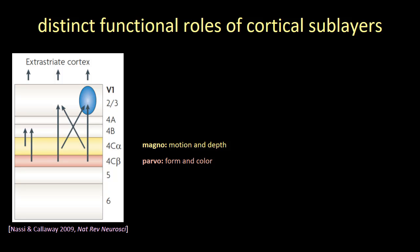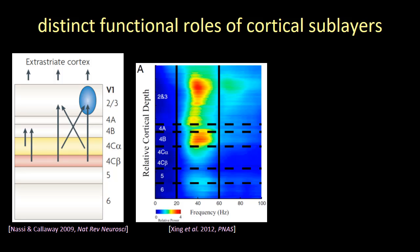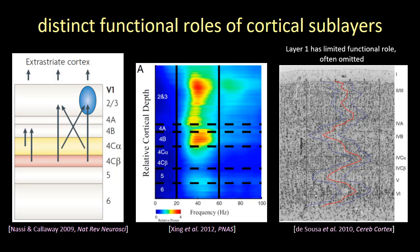We know that there are distinct functional roles of the cortical sublayers. For example, in V1 we typically subdivide layer four into four sublayers: 4A, 4B, 4C alpha (the magnocellular pathway, responsible for processing motion and depth), and layer 4C beta (the parvocellular pathway, responsible for processing form and color). Layers two and three tend to have similar functional roles and are typically lumped together in visual cortex. In motor cortex, people tend to distinguish between layers 5A and 5B. Layer one is often omitted from functional diagrams because it is very cell-sparse, containing mostly horizontal fibers, and therefore has a very limited functional role.